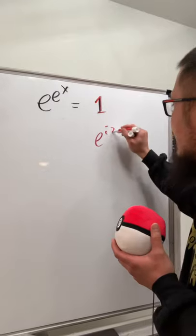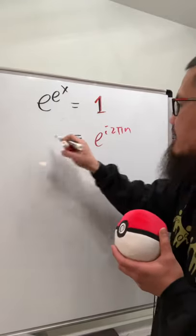First of all, look at the 1. e to the i pi n like this, and the 1 is equal to e to the e to the x, right?